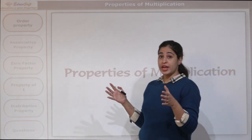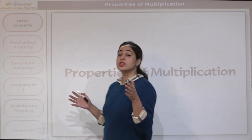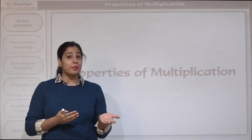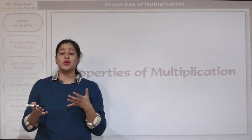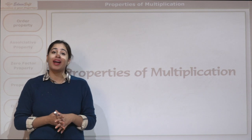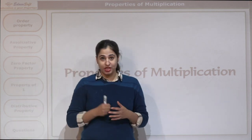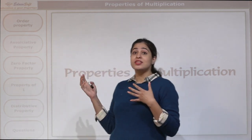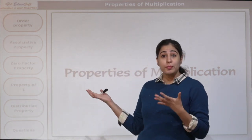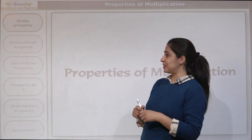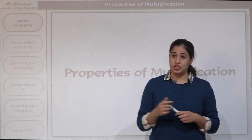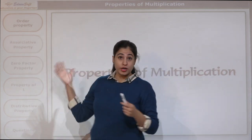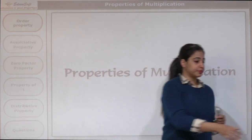There, we learned how to multiply by a one-digit number and also by a two-digit number. Now, let's learn about the properties of multiplication. The first one is our order property.